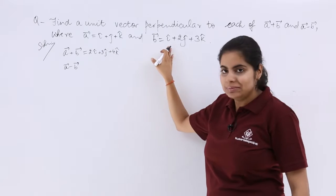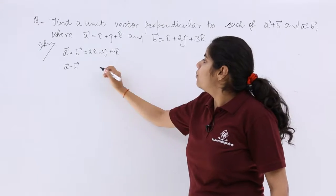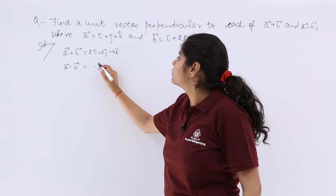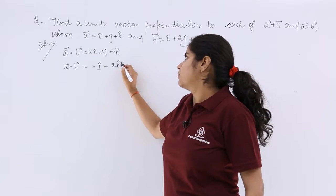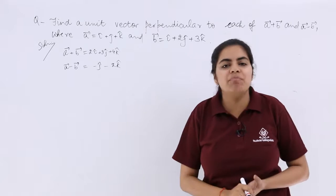It is 0i, then minus j, then minus 2k. So this is a plus b, this is a minus b.